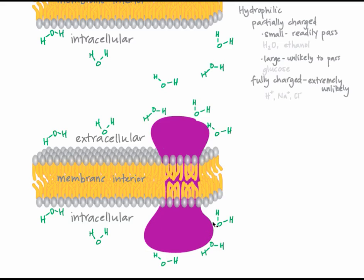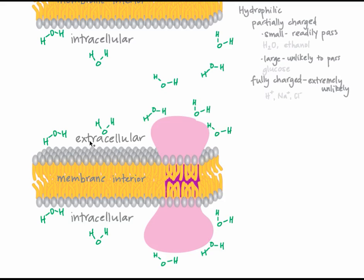Because these environments are distinct, the protein must also have three distinct regions in order to interact favorably with its surrounding environment. The extracellular and intracellular environments are watery and hydrophilic, so the parts of the protein exposed to these environments must also be hydrophilic in order to interact favorably. The membrane interior is hydrophobic, so the parts of a protein exposed to this environment must also be hydrophobic. In the transmembrane protein tutorial, we'll come back to this to see what protein structures are appropriate for the different properties of each region.